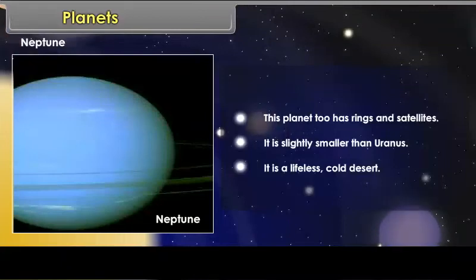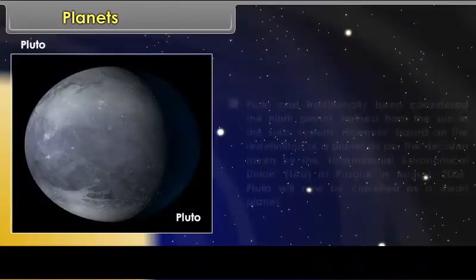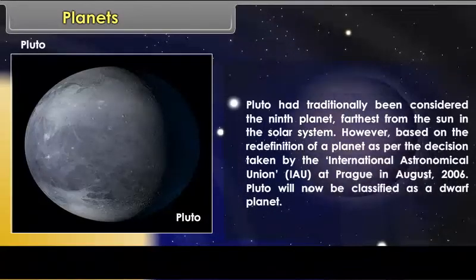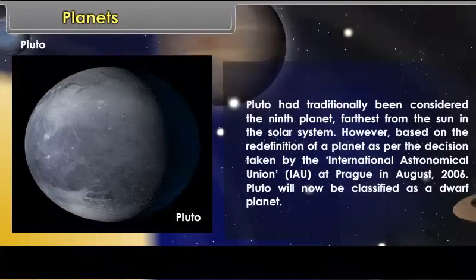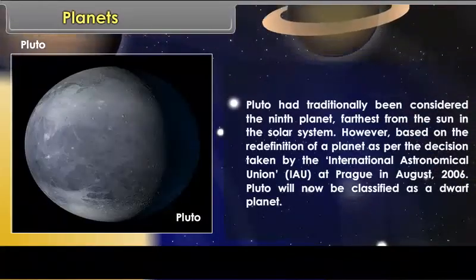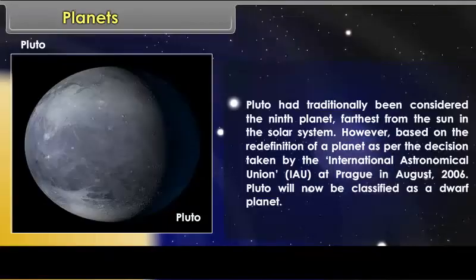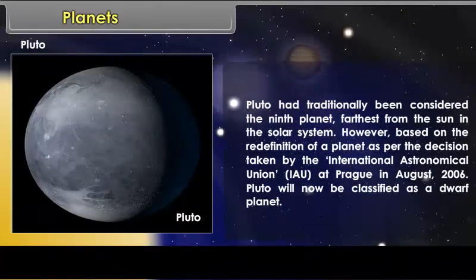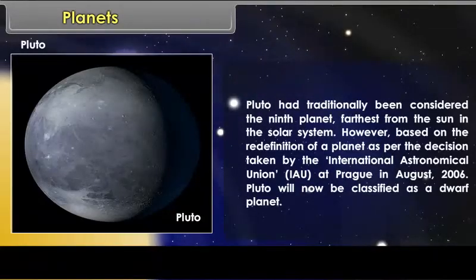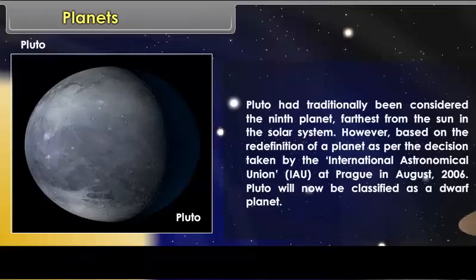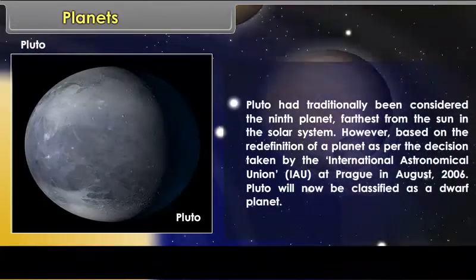Pluto. Pluto had traditionally been considered the ninth planet, farthest from the Sun in the solar system. However, based on the redefinition of a planet, as per the decision taken by the International Astronomical Union, IAU, at Prague in August 2006, Pluto will now be classified as a dwarf planet.